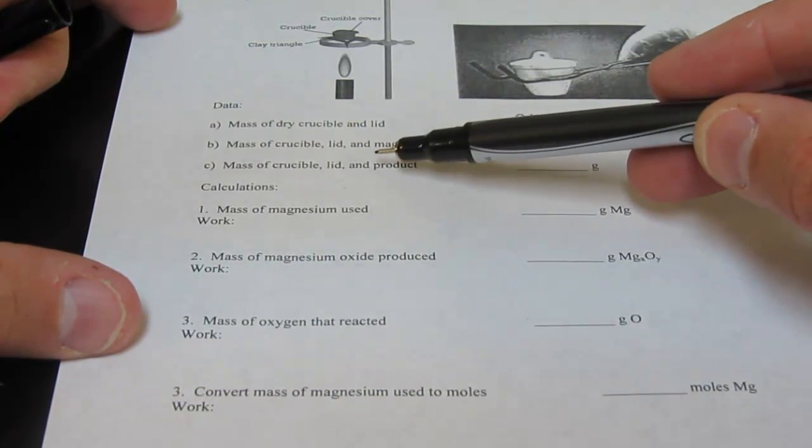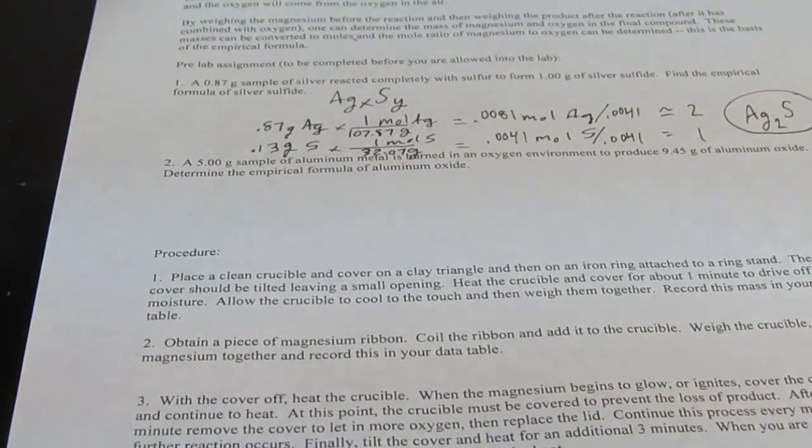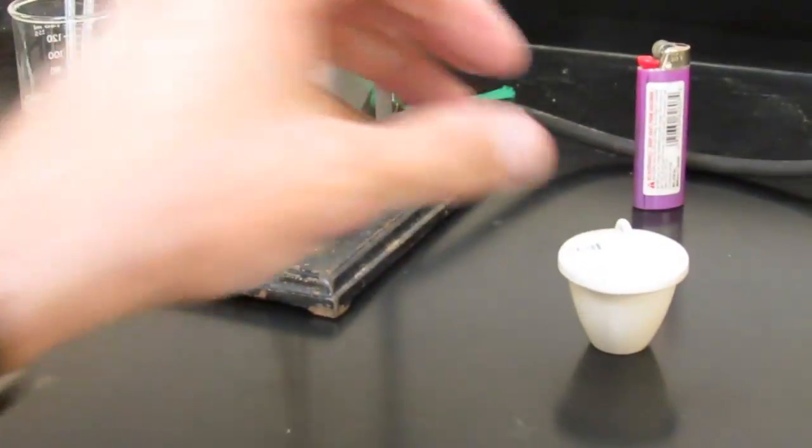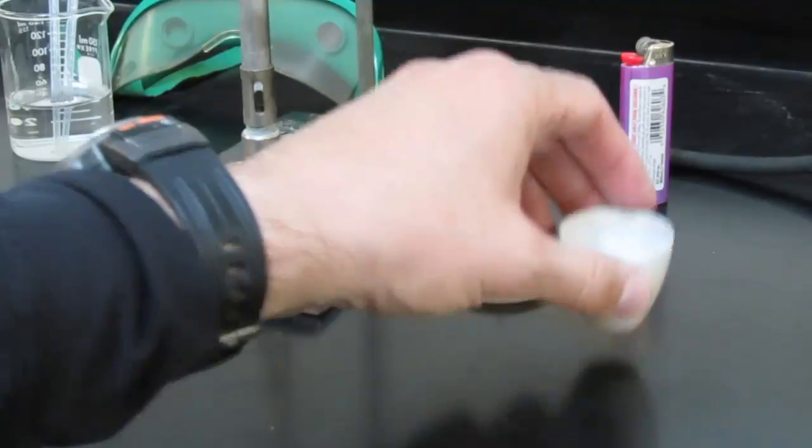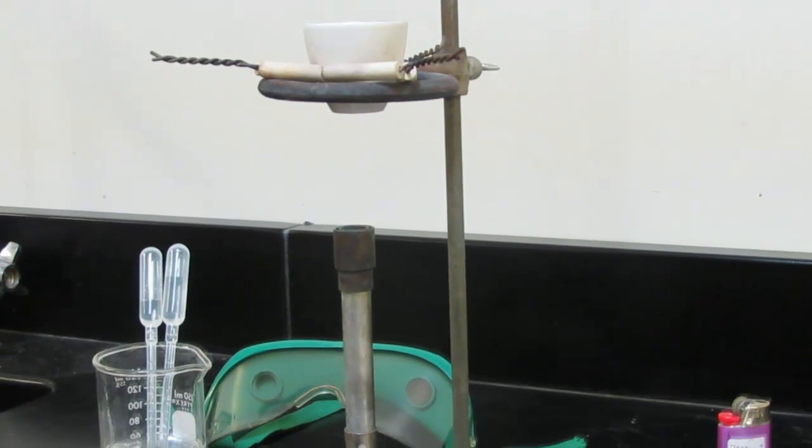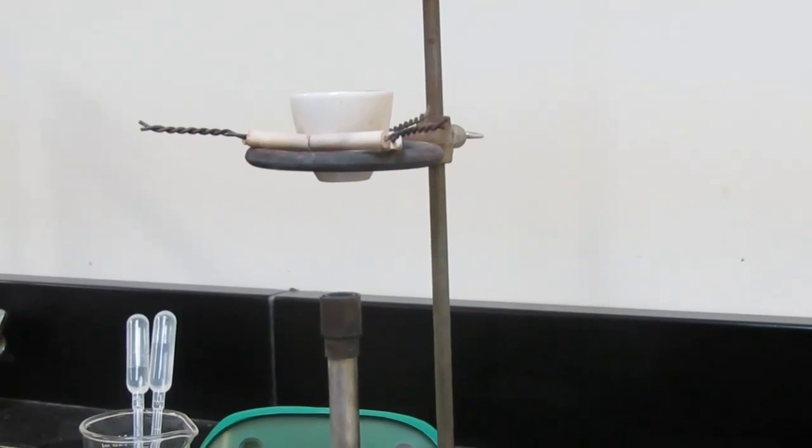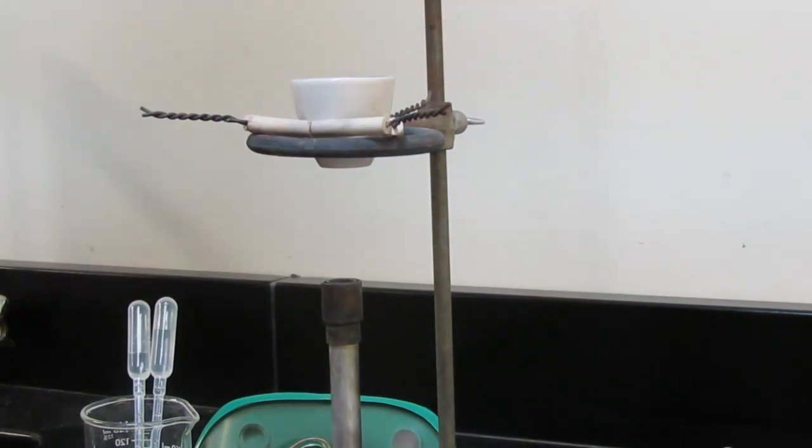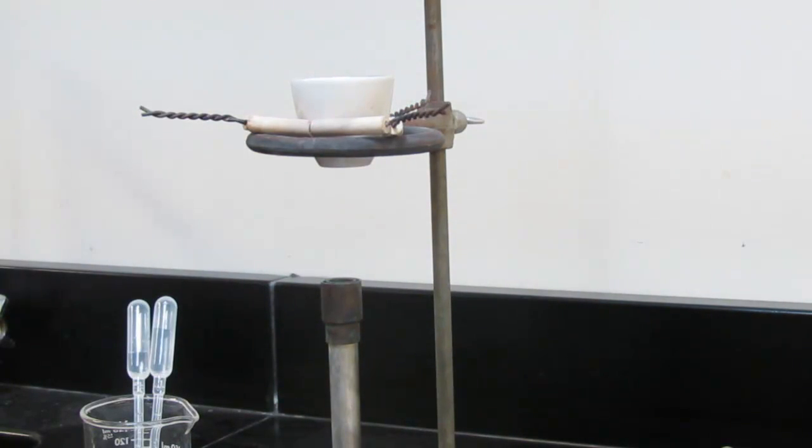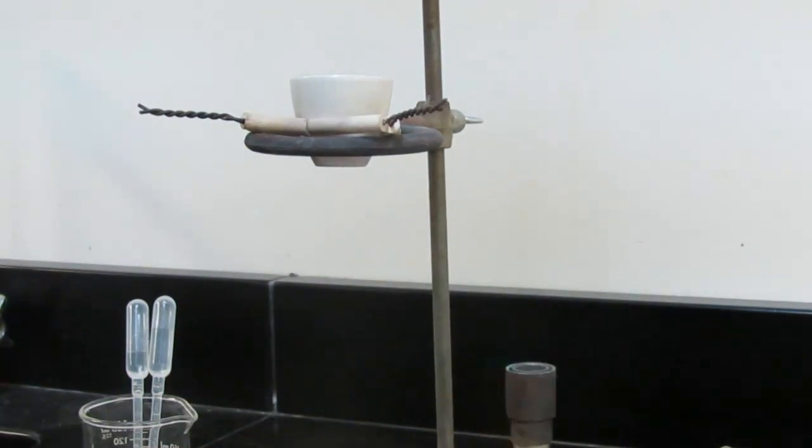Now before we can find the mass of the crucible lid and product, we have to perform the experiment. We have to react the magnesium with the oxygen. So what we're going to do is we're going to place this with the lid off on our clay triangle. So you'll see we'll take our lid off, place the crucible on our clay triangle, and we'll then go ahead and light this. We'll try to take the camera off in just a second so you guys can see what it looks like from the top. So you guys will wear your safety glasses. Make sure you put those on. We'll light our Bunsen burner.